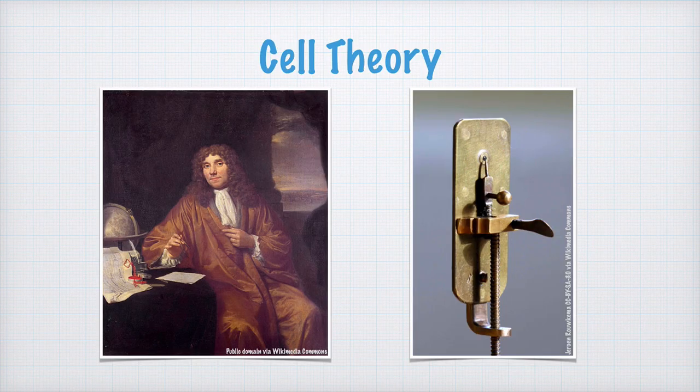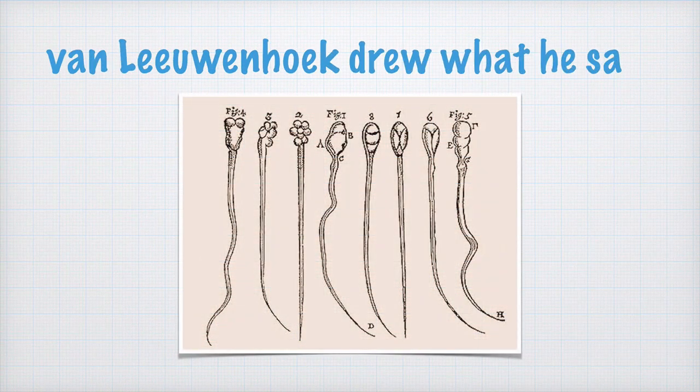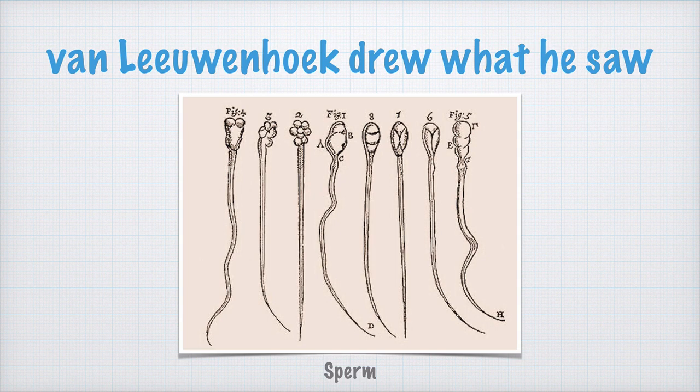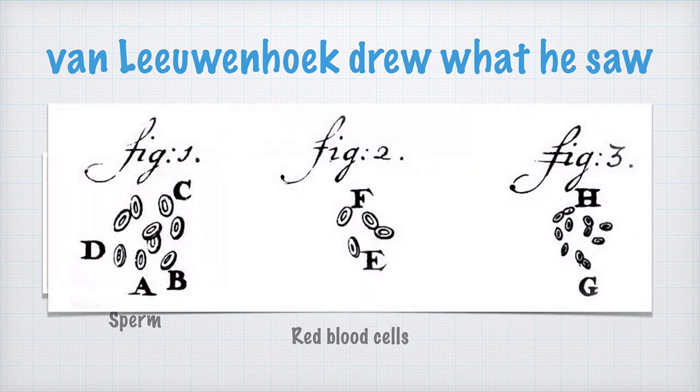Through the lens, van Leeuwenhoek saw what no one had seen before him. He examined sperm from different species and formulated a theory of how sperm fertilizes eggs. He examined blood and discovered red blood cells, among other things.